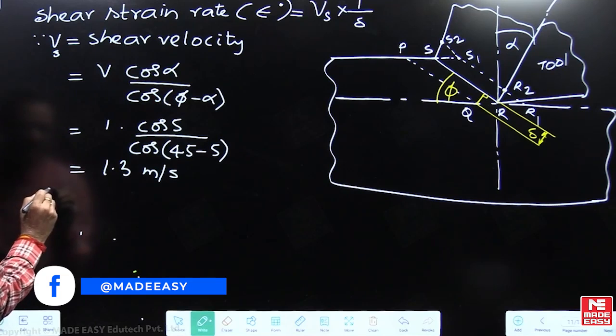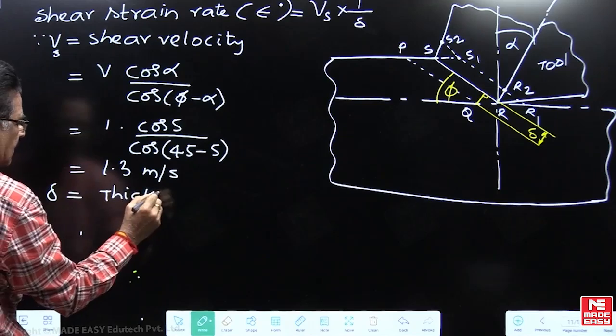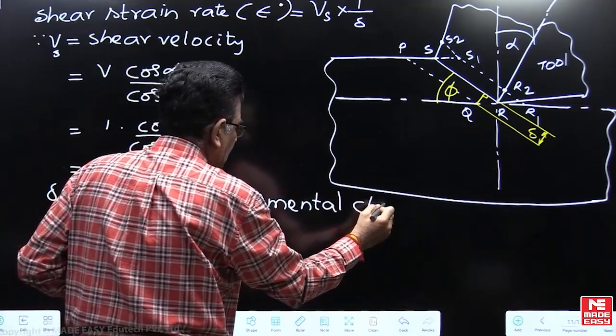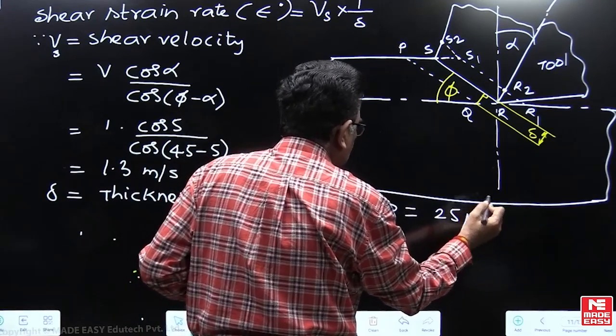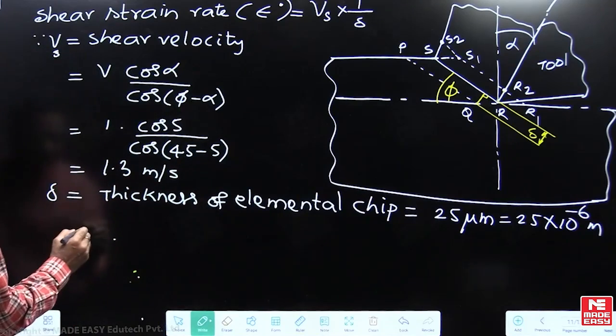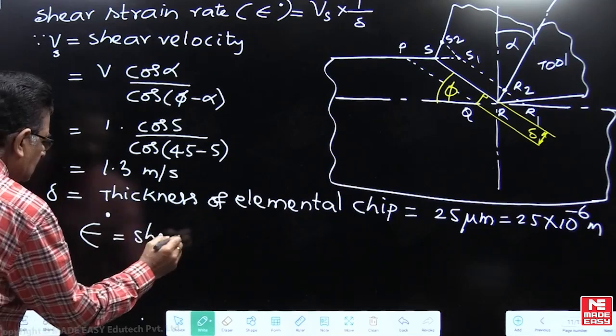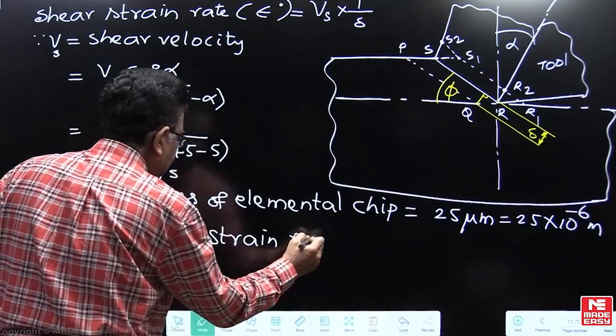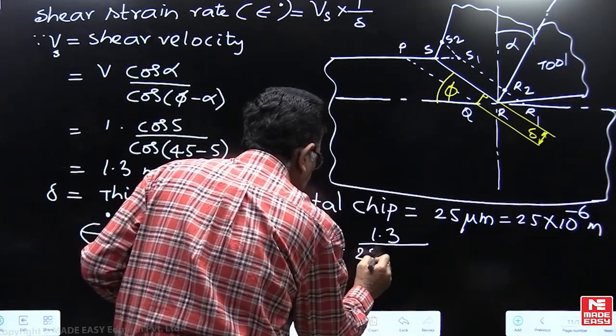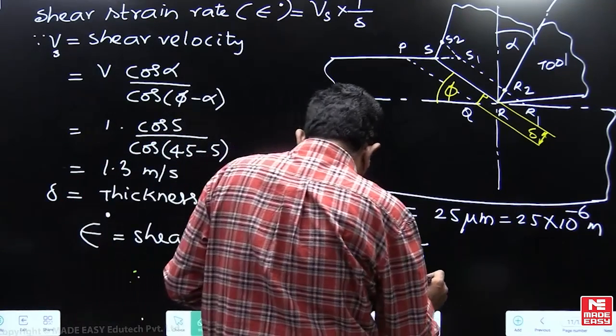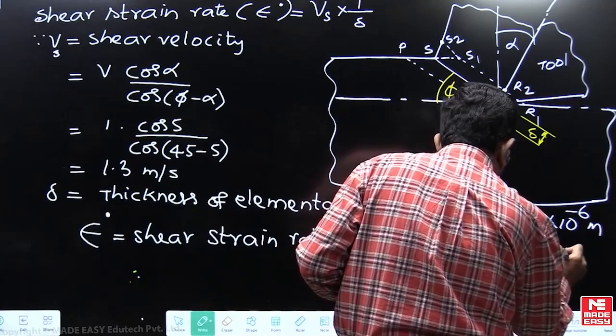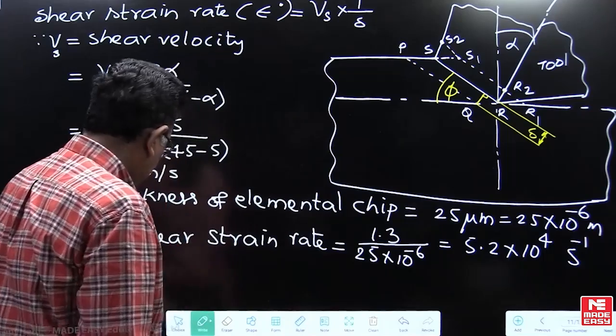Once you have Vs value, delta is the thickness of the elemental chip as shown in the diagram. Its value is given by examiner as 25 microns, or 25 into 10 power minus 6 meters. Now once this information is available, we can calculate shear strain rate equals 1.3 divided by 25 into 10 to the power of minus 6. This comes out to be 5.2 into 10 power 4 per second, that is second inverse. That will be the answer for this question by calculation.